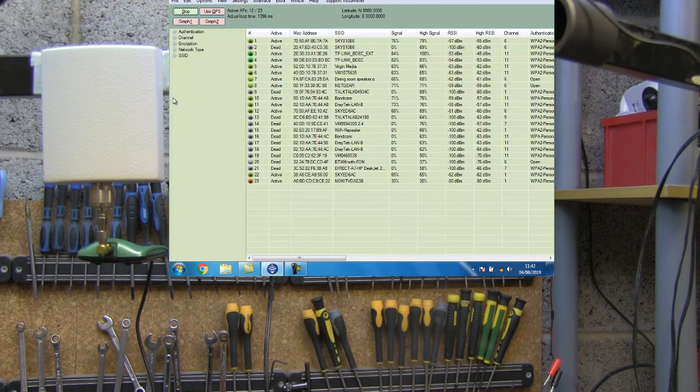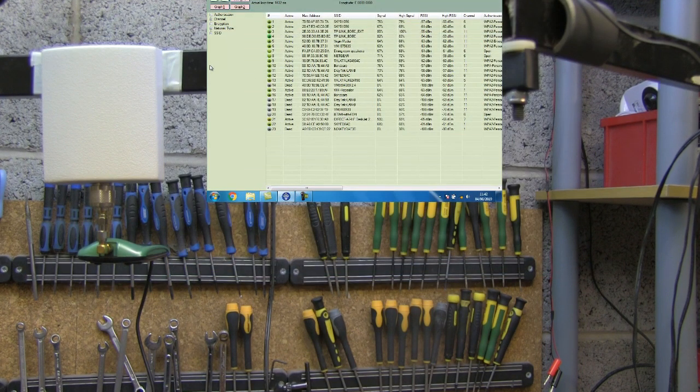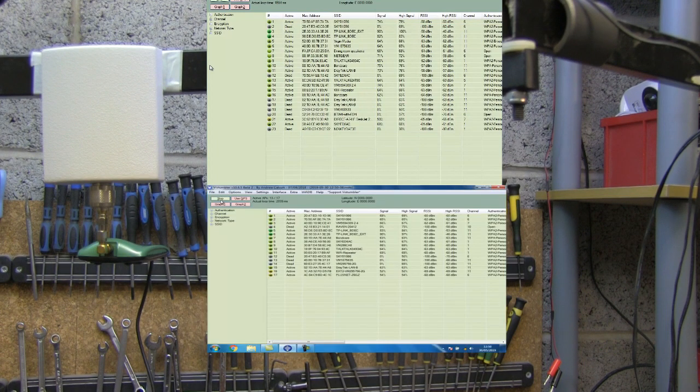Most of them are a nice green color, so nice strong access points. And the Boncare one, which I normally use as a measuring yardstick, that's coming in at 71%. So that's acceptable. Generally, not too bad. And I'll overlay the TP-Link one alongside this so you can compare them as well.